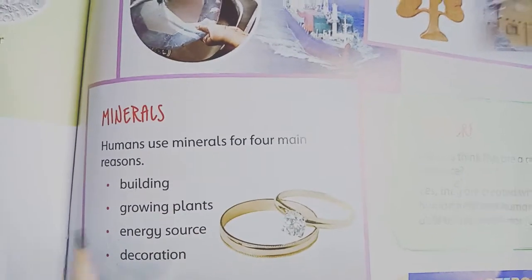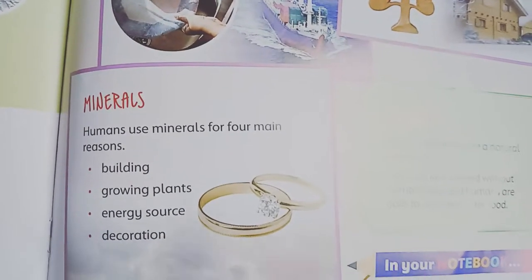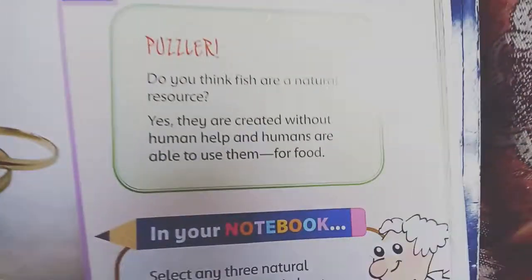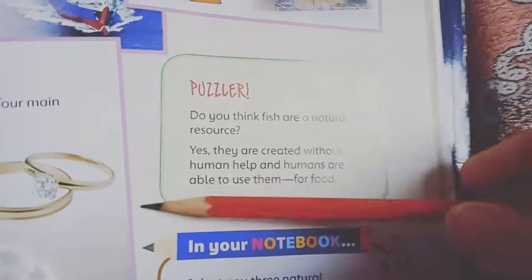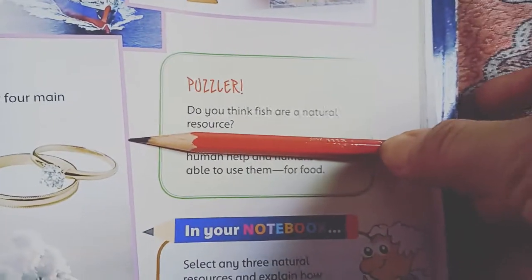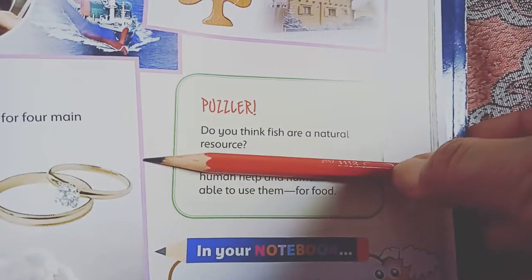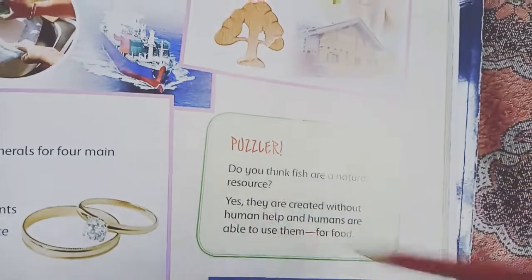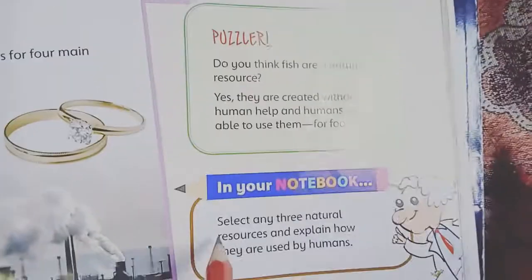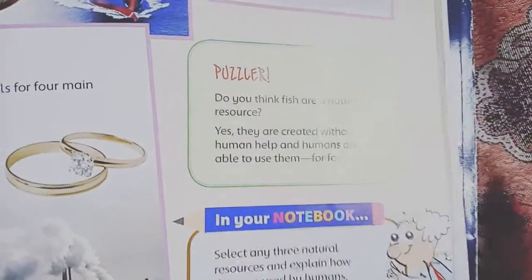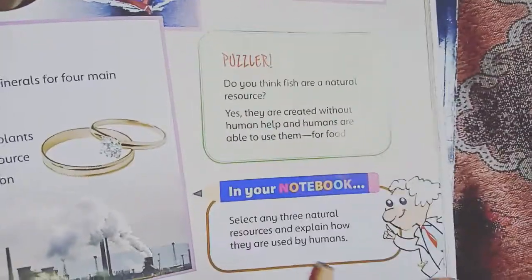And how are humans using minerals? They use minerals for four reasons: to build houses, for growing plants, for energy resources, and for decoration. Now — do you think fish are natural resources? Yes, fish are natural resources; they are created without human help and are for the use of humans. You have to select three natural resources and explain how they are used by human beings.